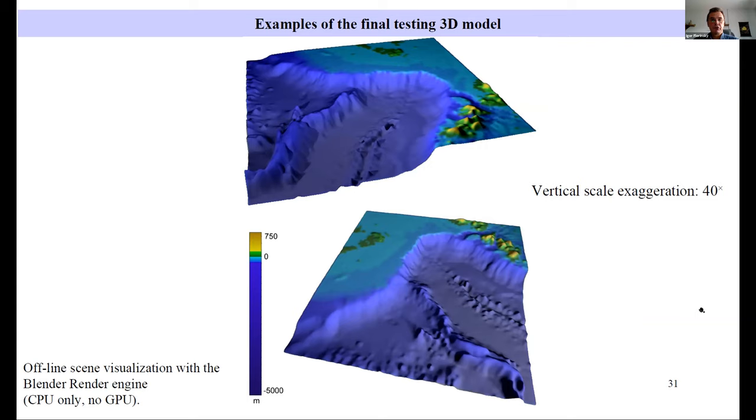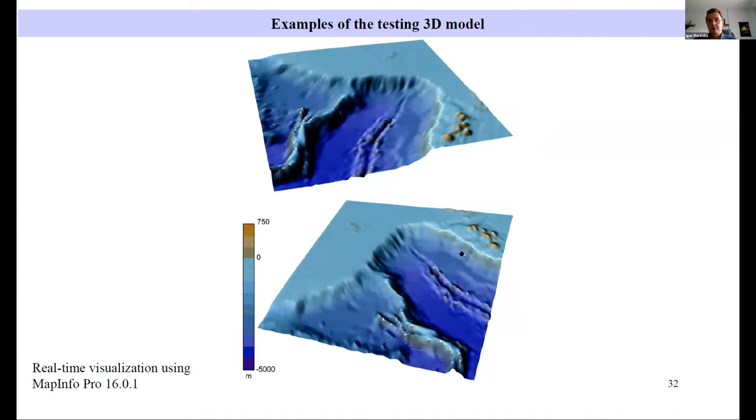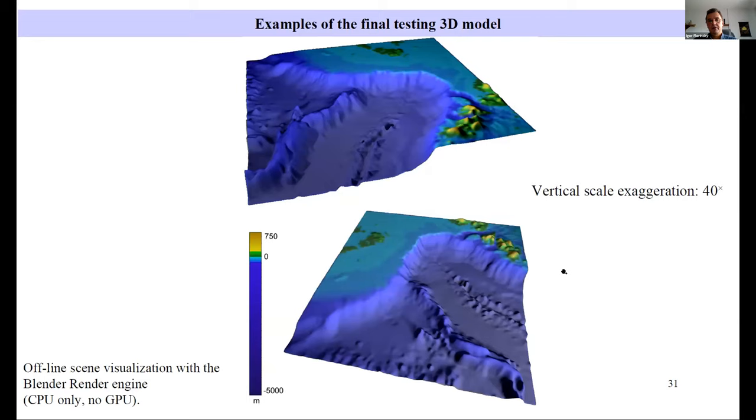Offline scene visualization with the Blender render engine with the vertical scale exaggeration of 40. It takes, for this very small DEM, about seven minutes using a pretty strong personal computer. Comparing with mainstream GIS software, for example MapInfo, it takes a couple seconds, but you can see that the cost is quality of the final model. You can compare these 3D models produced by Blender and these 3D models produced by MapInfo.